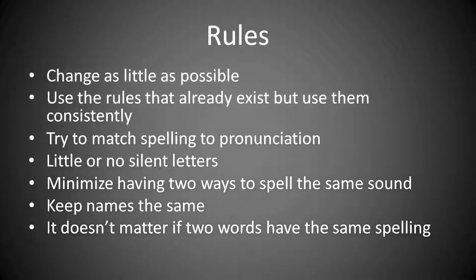So the rules or guidelines are: To change as little as possible, because I still want the language to be recognisable. Use the rules that already exist, but use them consistently. Try to match spelling to pronunciation. Little or no silent letters. Minimise having two ways to spell the same sound. Keep names the same, because changing names will just be a nightmare. And it doesn't matter if two words have the same spelling. Because we can just use context to understand. Like we do when listening.